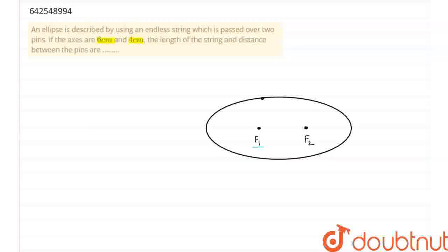So, let my f1 be first pin and f2 be the second pin and let this point p be the point where that endless string is passed over. So, we need to find this distance pf1 plus pf2 and we also know that this distance on any arbitrary point on this ellipse will remain constant.